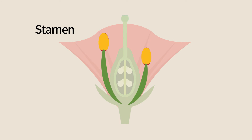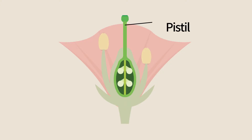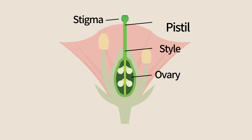Stamen are the male sex organs. They are composed of a stalk called a filament, topped by an anther, where pollen is produced by meiosis and from where it is eventually dispersed. The female sex organ, the pistil, is usually in the heart of the flower. It consists of the stigma, the style, and the ovary, where the eggs develop.